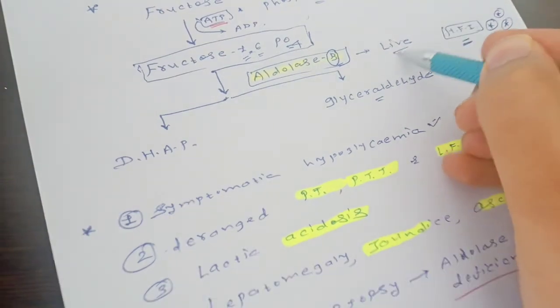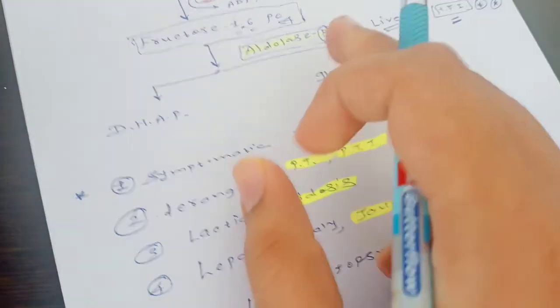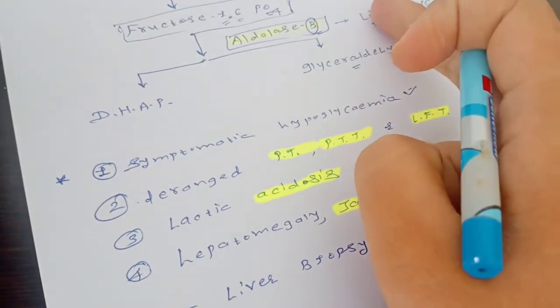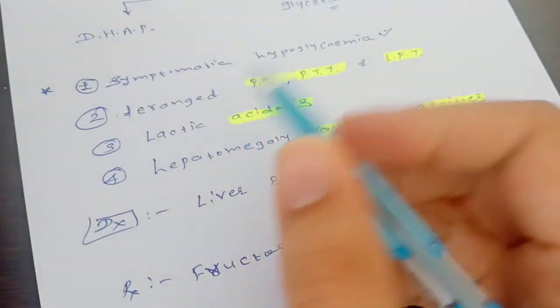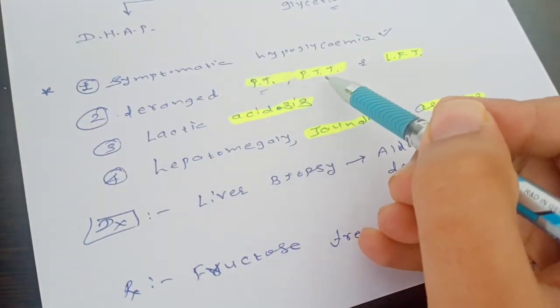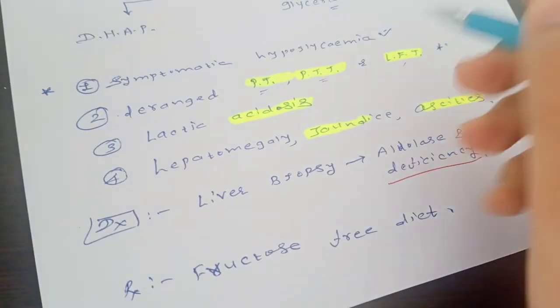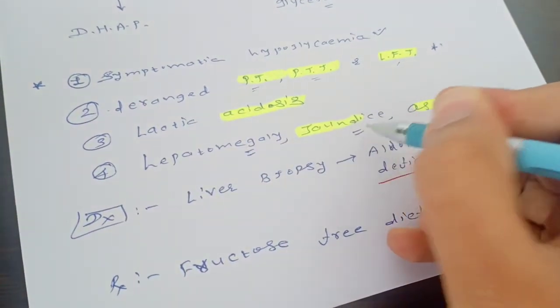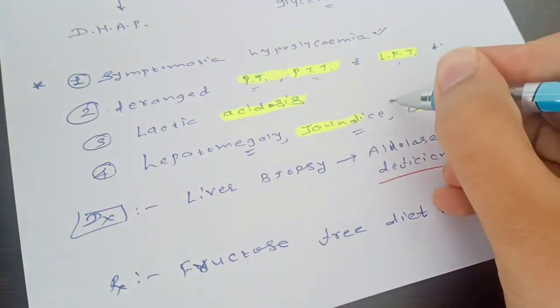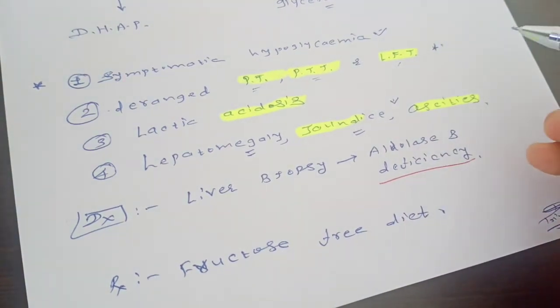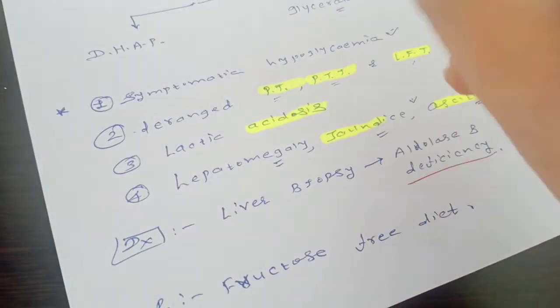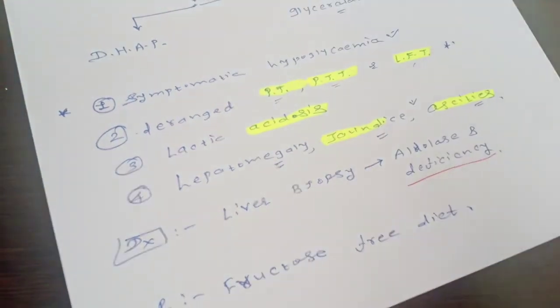All these steps will occur in the liver. I have told you now the aldolase B—that's why it is given the name aldolase B—it occurs in the liver. So the liver will be affected. Biochemically it will derange the prothrombin time, partial thromboplastin time, and liver function tests will be deranged. Clinically we will see the child with hepatomegaly, jaundice, and ascites. Whenever the liver parenchyma will be damaged, it will increase the level of bilirubin, and that will be clinically reflected as jaundice. The liver will be affected, so its back pressure will increase and it will produce ascites.